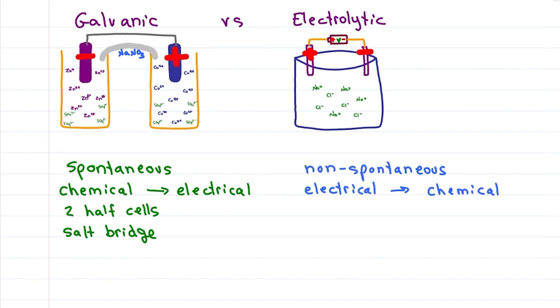In electrolytic cells, it can happen in one container, though you may also see it as two half cells with a salt bridge to show a reversal of the galvanic cell.